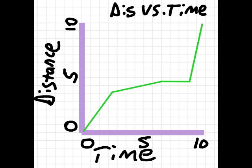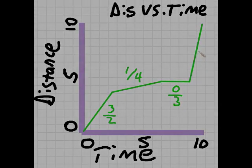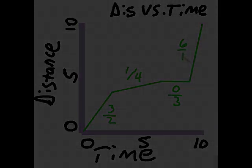First, three meters in two seconds, so that's the slope of three over two. Then it slows to one meter in four seconds, so that's a slope of one fourth. Then it stops for three seconds, so that's zero thirds. Then, six over one.